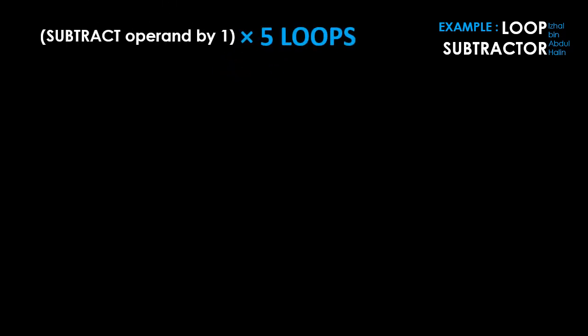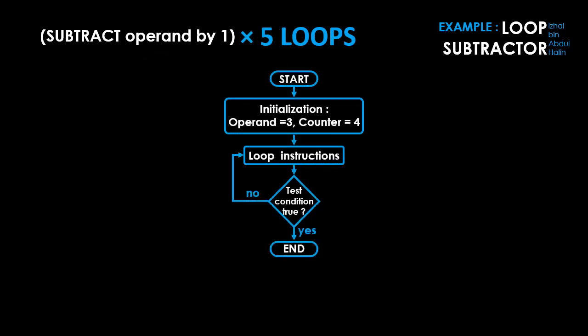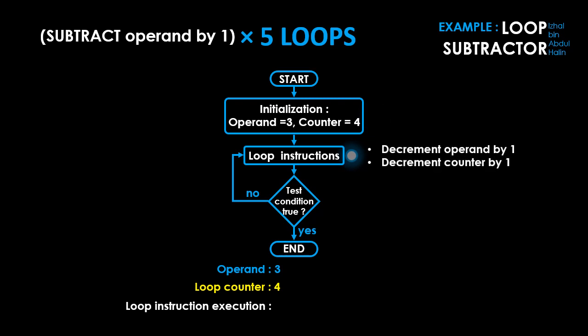Let's look at an example program using the DBCS instruction — we will call it the Loop Subtractor program. The purpose of the program is to subtract 1 from an operand initialized to 3, using a do-while loop that loops 5 times. Our final operand value should be negative 2. At the beginning, we initialize our operand to 3 and our loop counter to 4. The loop instructions decrement the operand and loop counter by 1.